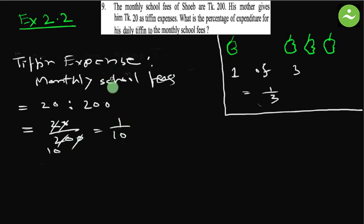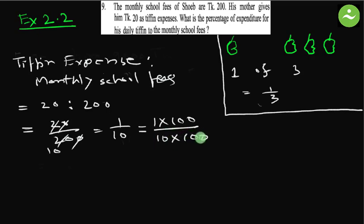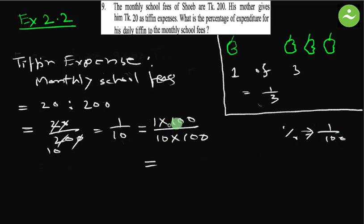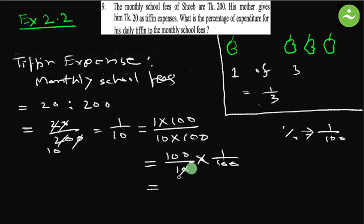They are asking us to express this ratio as a percentage. We know how to express as percentage — we multiply both numerator and denominator by 100. We separate 1 by 100 because percent means 1 by 100. So 10 multiplied by 1 by 100 simplifies to 10 percent.